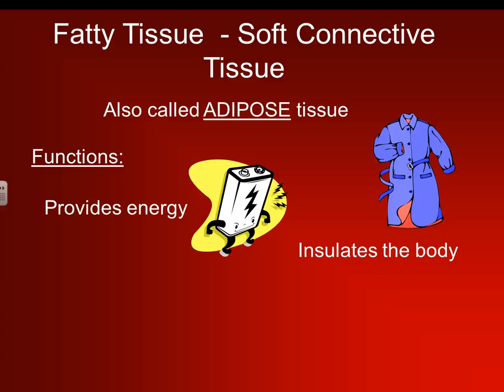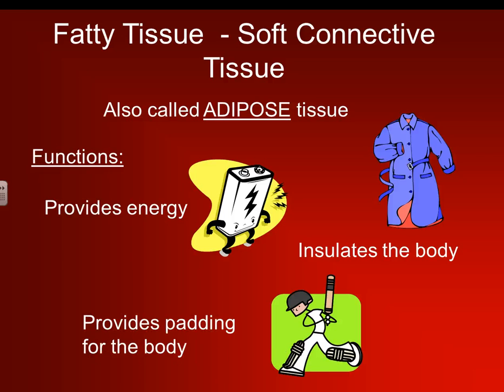Fat also insulates the body, helping keep us warm and giving us a little padding if we fall. It provides padding so that if we fall or get hit, we're not hitting directly onto the bone or our internal organs and damaging things.